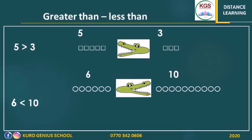Look at the next one. We have six symbols, and on the right side we have ten symbols. The alligator wants to eat ten. Why? Because he is very hungry. He doesn't want to eat six — he wants to eat ten. So we will start from the left and say: six is less than ten.